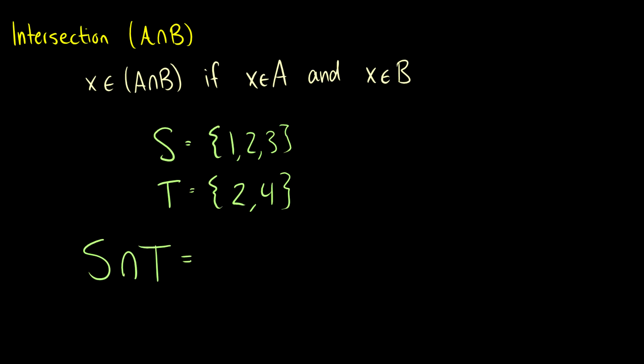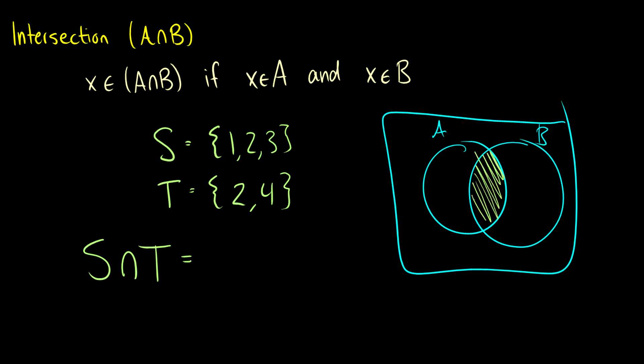The other operation we can do is we can take the intersection. So when we have A and we have a set B, the intersection is this area in the middle where they cross over. So for instance, X is going to be in A intersection B if X is in A and X is in B. And we use this upside down U, which we call CAP. At least that's what it's called in LaTeX. You can call it intersection or CAP. CAP is much more efficient. Some people say AND.